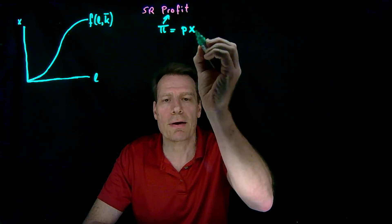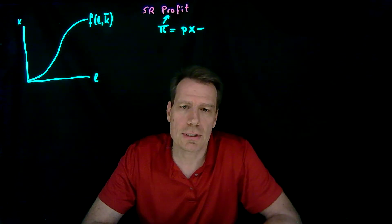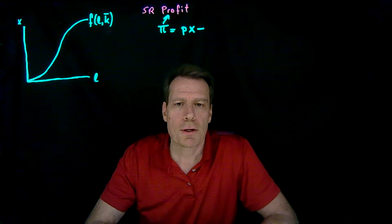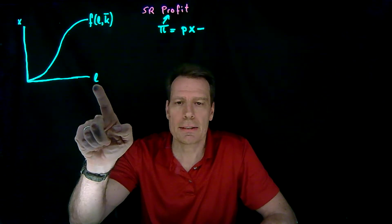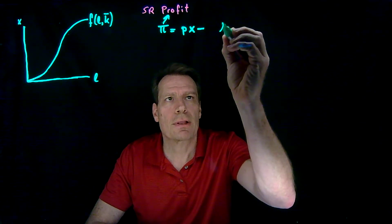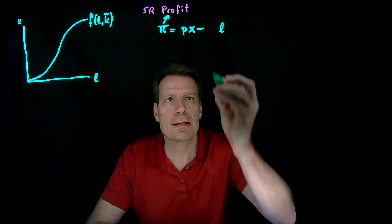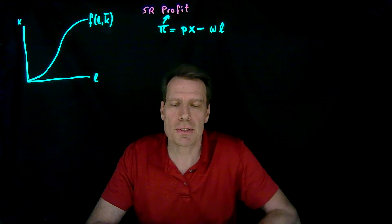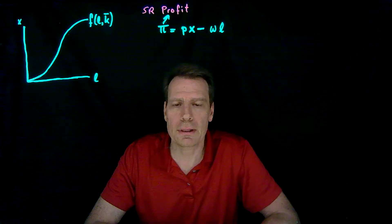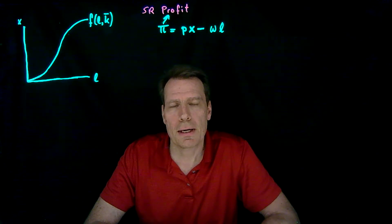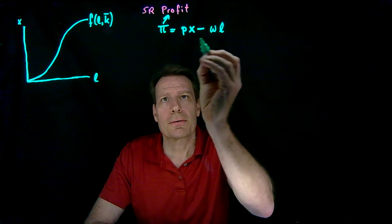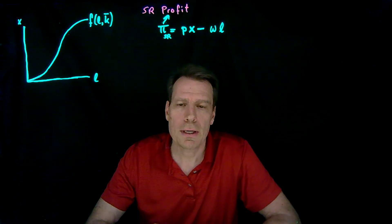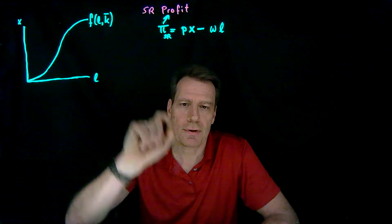Profit is equal to revenues minus the firm's costs. And in the short run, the firm's costs are its labor costs. Firms are hiring labor hours, L, and they're paying a certain wage. If we multiply the wage times the number of labor hours they hire, we'll get the total labor cost the firm incurs. Together, we're going to call this the short-run profit.